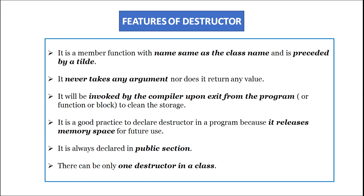Some important features of the destructor: it is a member function with the same name as the class preceded by a tilde sign. It never takes any argument nor does it return any value. It will be invoked by the compiler upon exit from the program, function, or block in which it is defined to clean the storage. It is always good practice to declare a destructor because it releases memory space for future use. It is always declared in the public section. There can be only one destructor in a class — we can have many constructors but only one destructor.